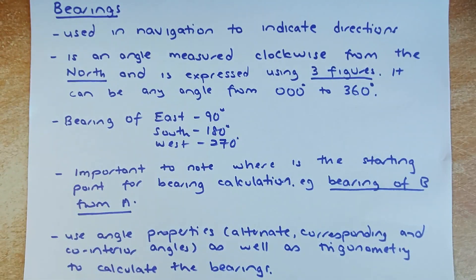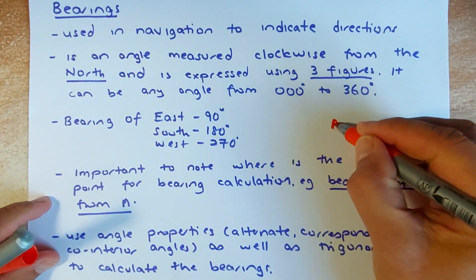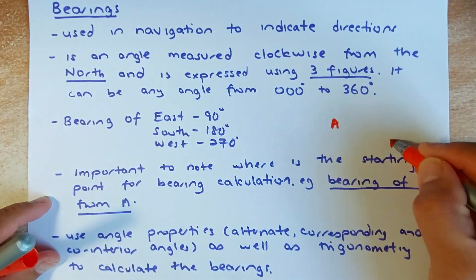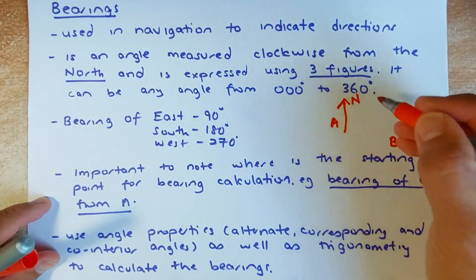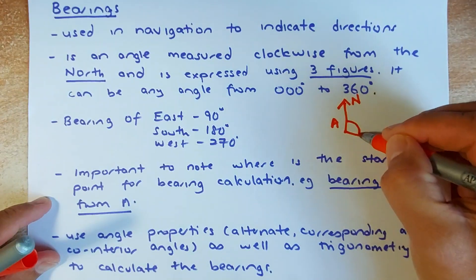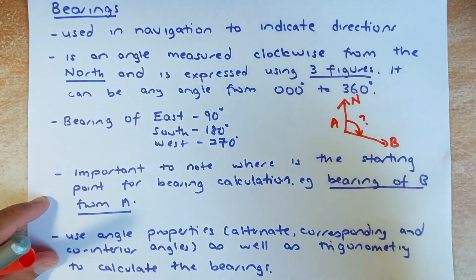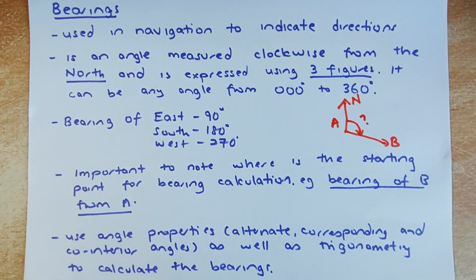Bearings are used in navigation to indicate direction. It is an angle measured clockwise from the north. So if you have a point A and you want to find the bearings of B from A, you draw from the north and you measure from the north a clockwise direction. That is the bearing of B from A.